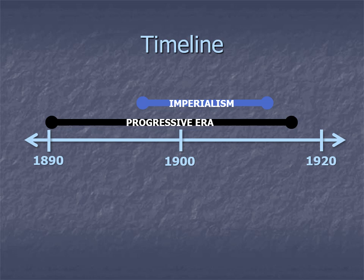World War I comes in at the end of all of this and overlaps with both of these things. It's right at the end of the era of imperialism and right at the end of the Progressive Era as well. So repeated names and ideas — it's because a lot of these things we've been studying over the last month or so overlap in their time period. All of these things are concurring and happening at the same time.